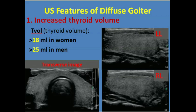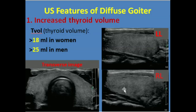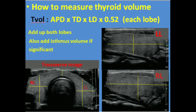Here are three images which are taken for the measurement of the goiter. This is the transverse image showing the right lobe, the left lobe, and the isthmus. This image shows the length of the left lobe, and the other one shows the length of the right lobe.